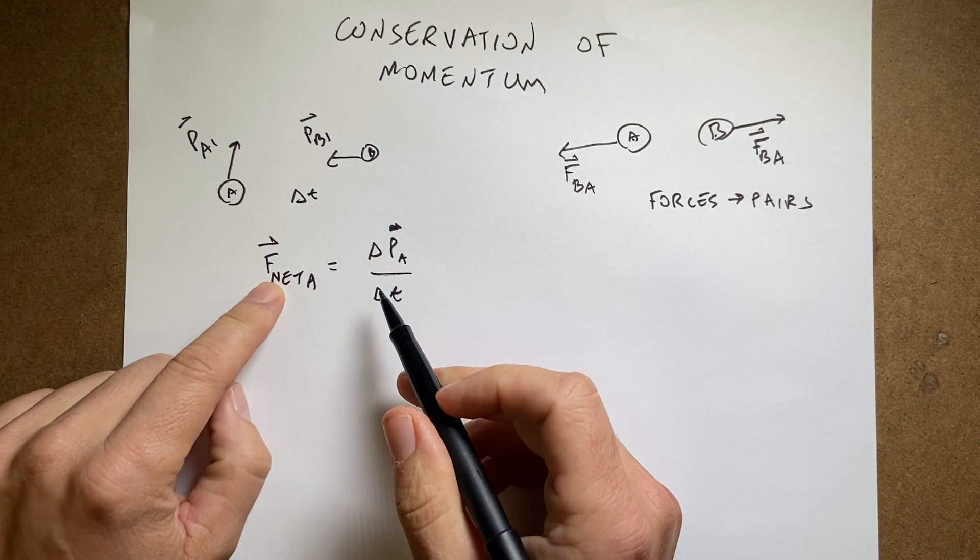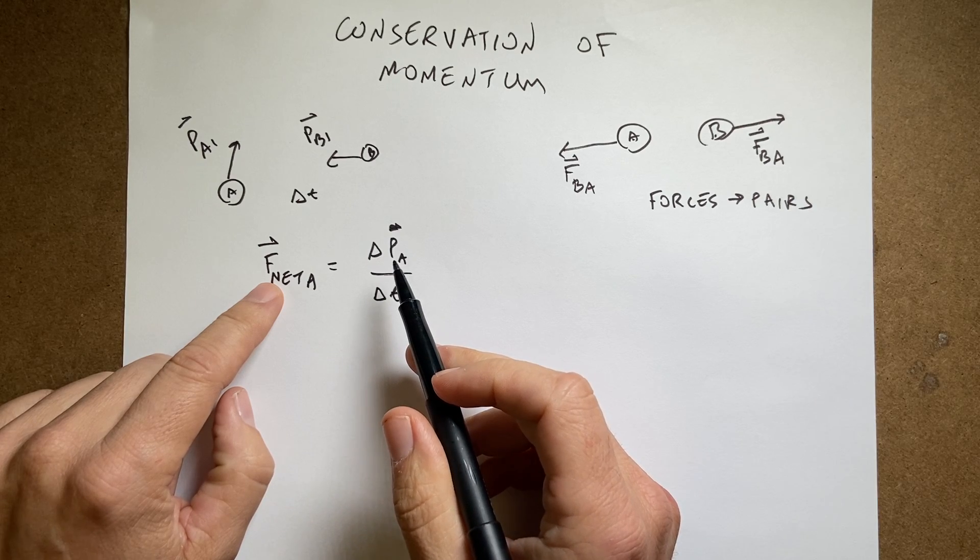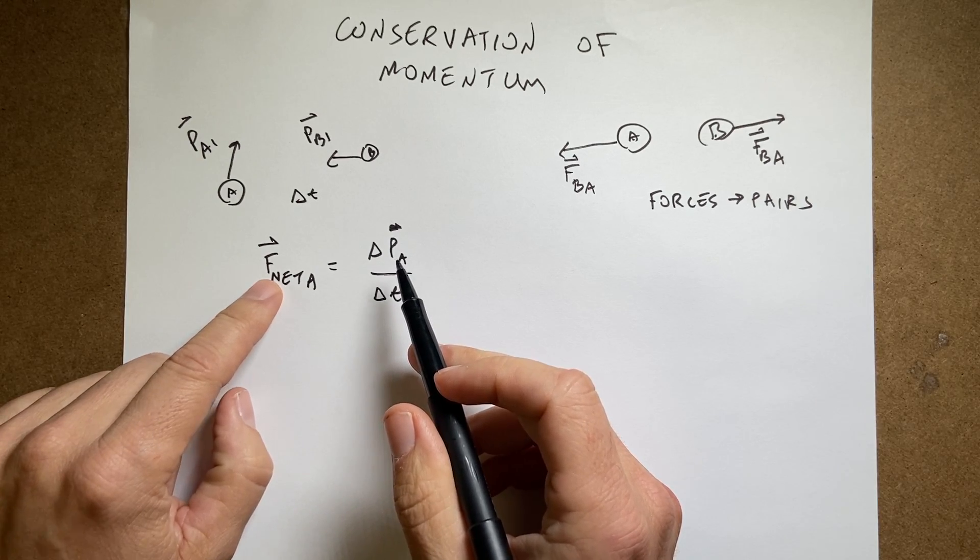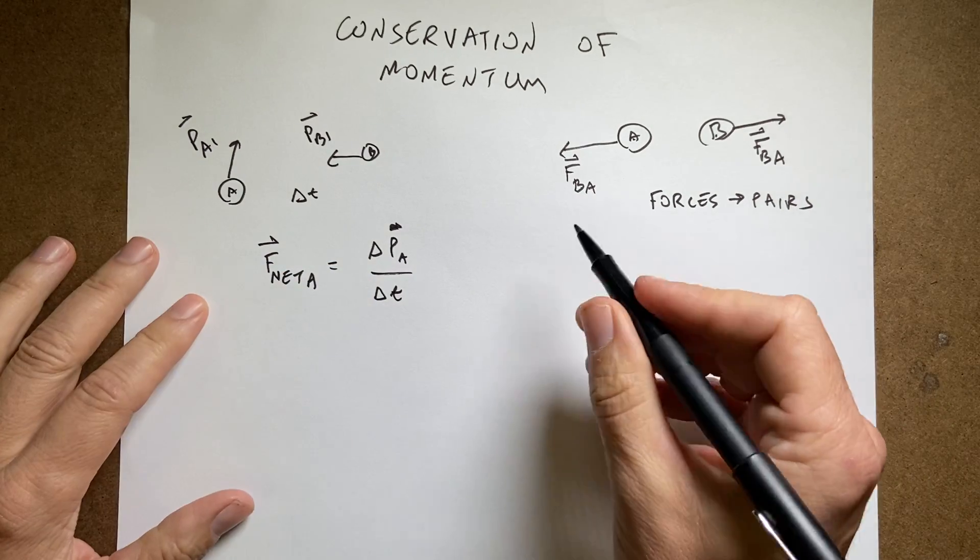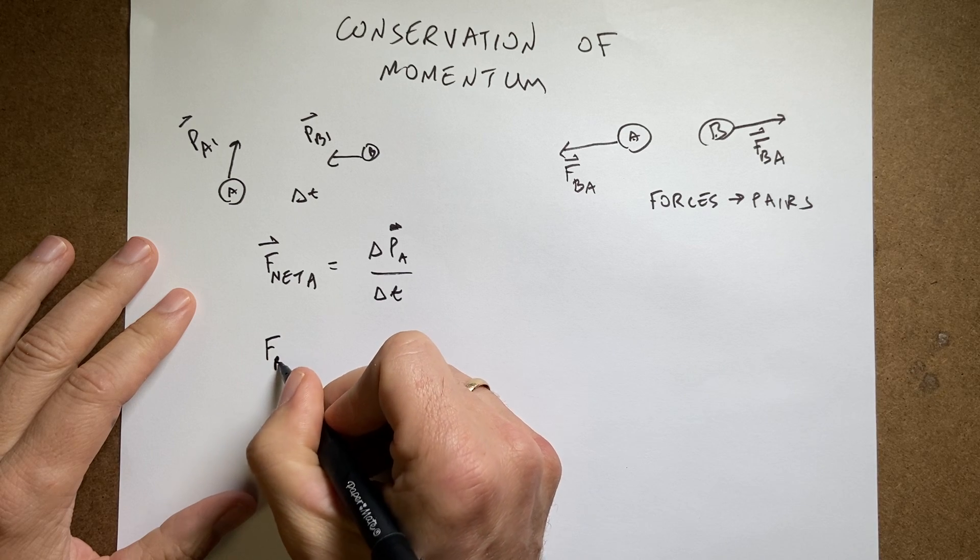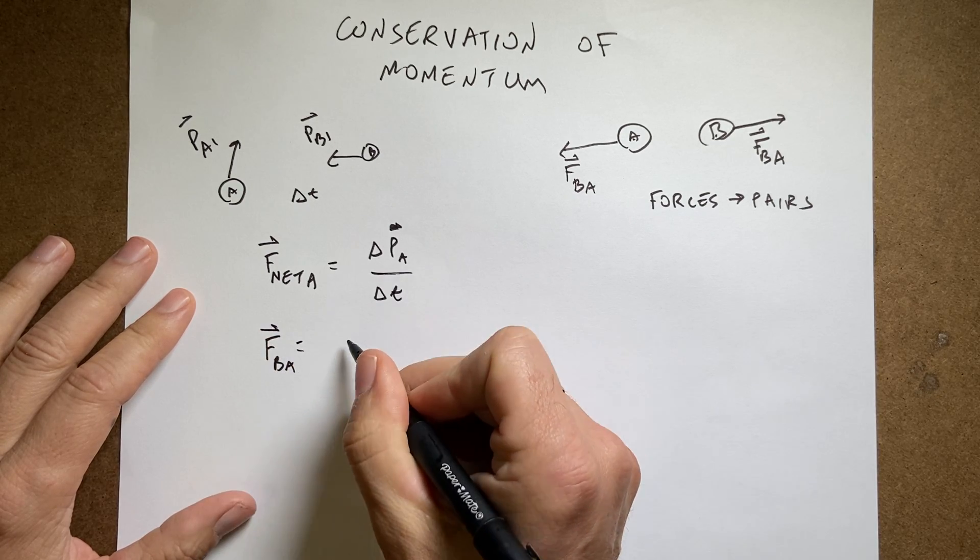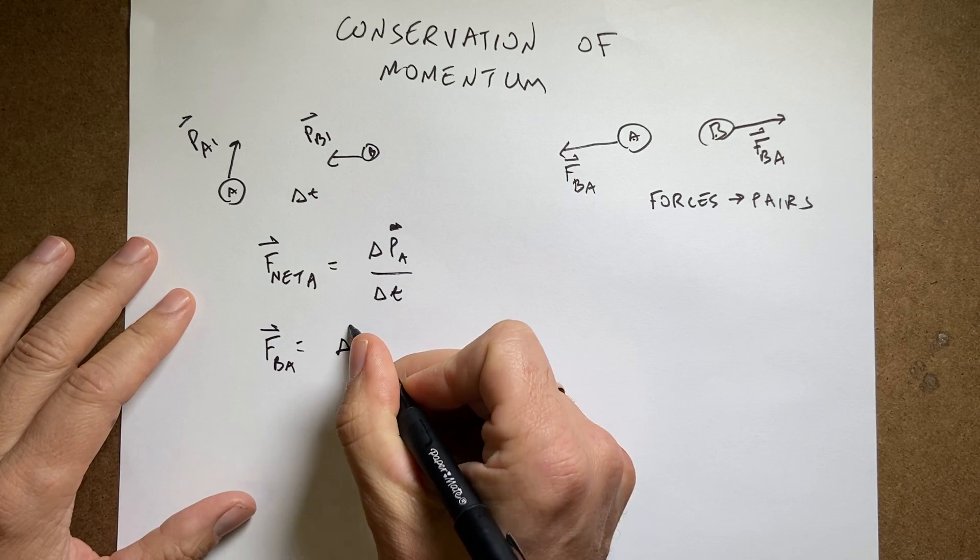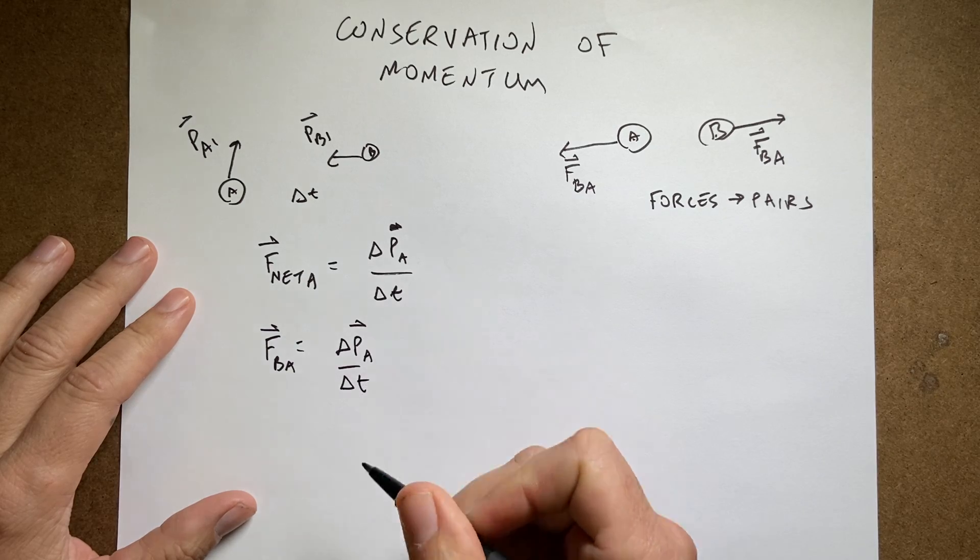Okay, so what force, if I only have these two objects interacting, then what force is acting on A? Well, it's just this. It's just BA. So, I can write FBA equals delta PA over delta T.